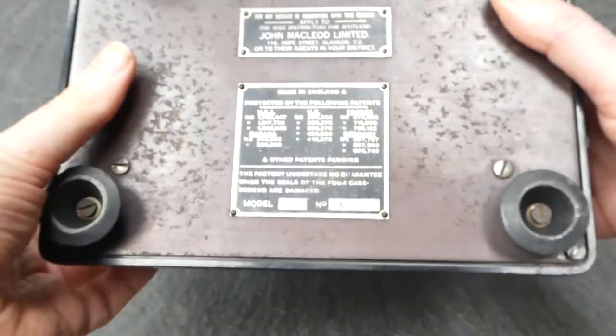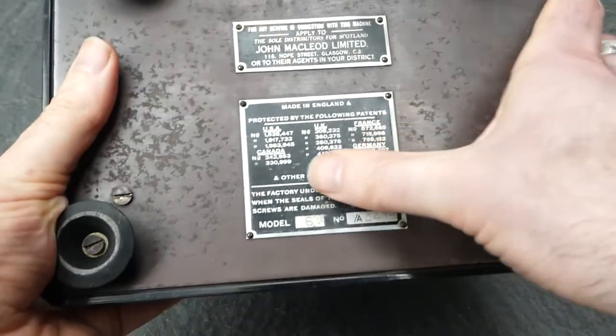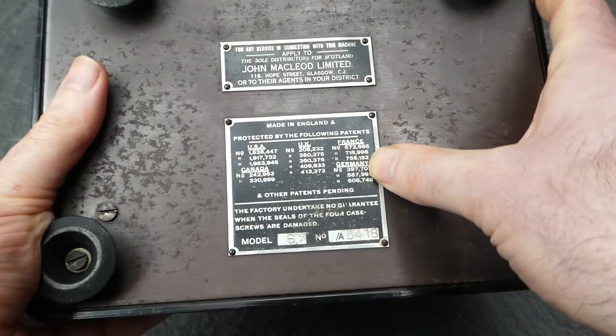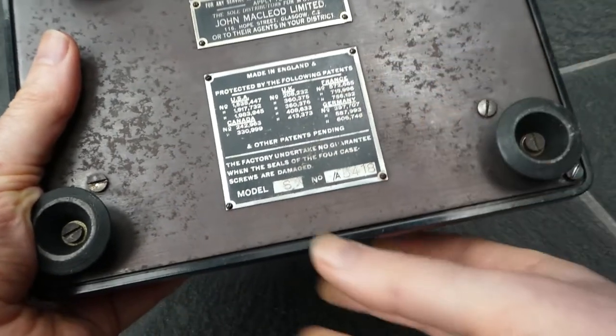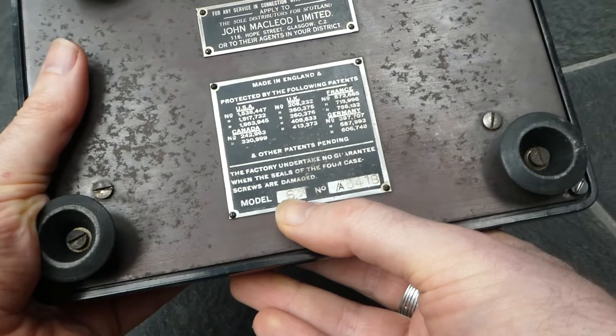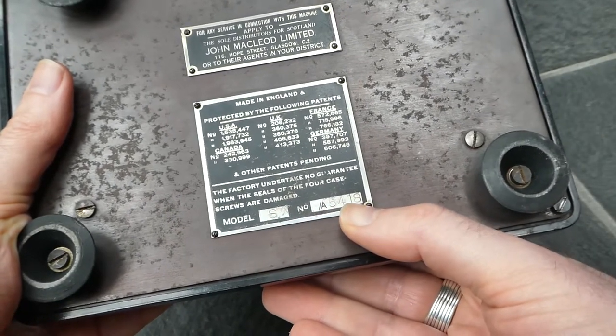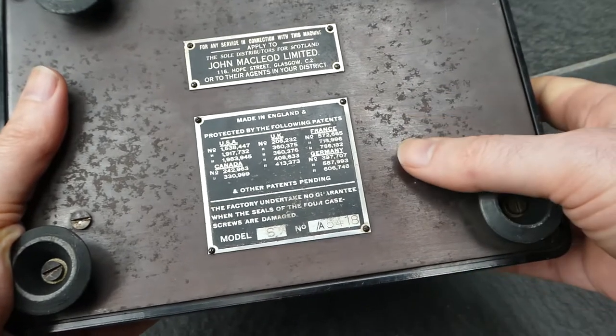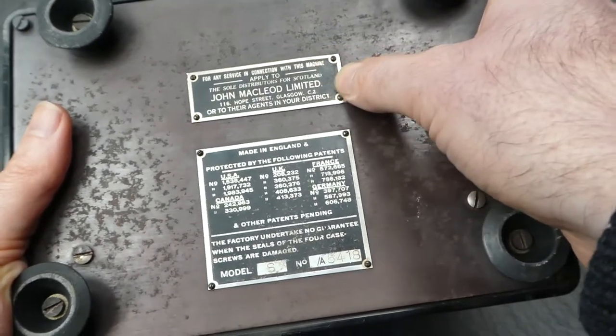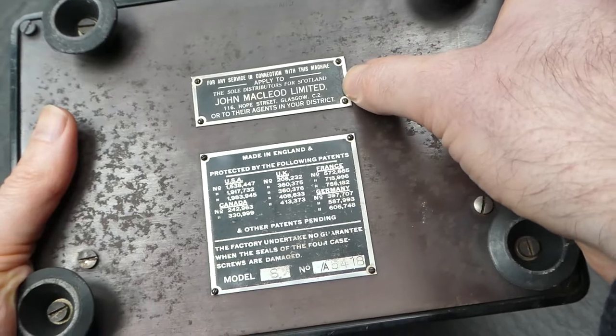And on the bottom it has a plate listing all the patent numbers. The model S, the sterling model, and number A 5418. And here is a label for the distributor.